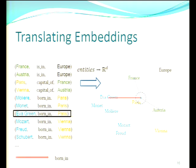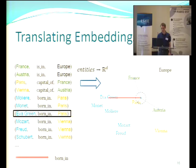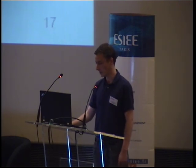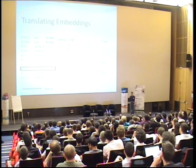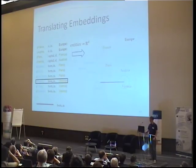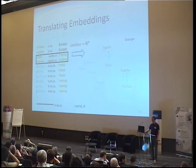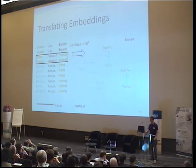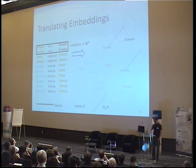Just to look at a pictorial visualization of what the translation does: if we have embeddings in two dimensions, we take an entity, translate according to the translation vector corresponding to the relation, and take the nearest neighbor — which is here Paris. We can do that for essentially any left member of 'born in.' For another relationship, it will be another translation, but still the same translation vector for every entity, and we take the nearest neighbors. We can find a translation vector for each relationship.